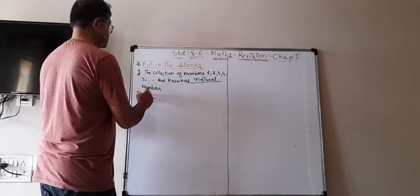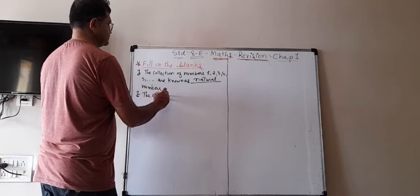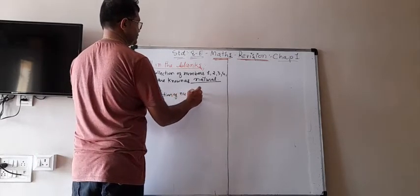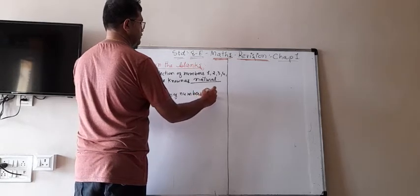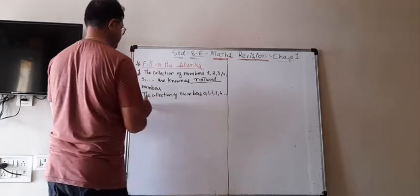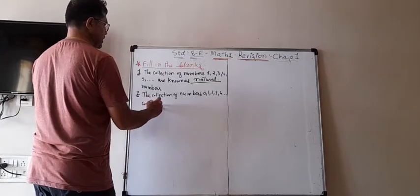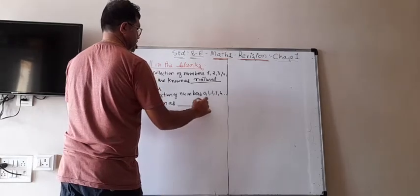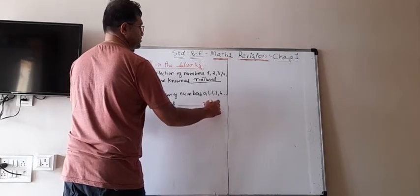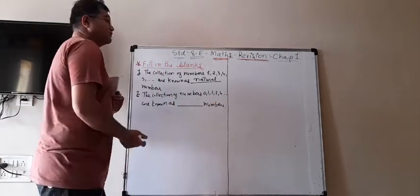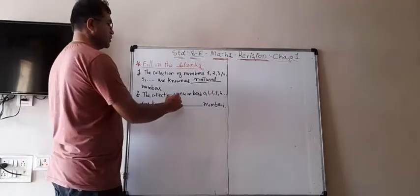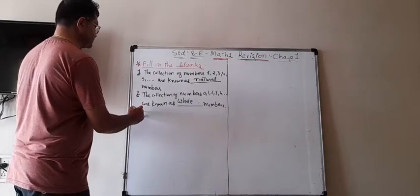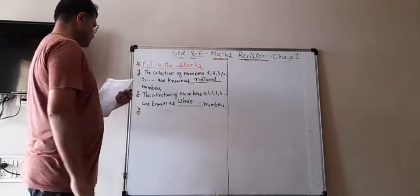The collection of numbers 0, 1, 2, 3, 4, dot dot dot are known as blank. When we add 0 along with the natural numbers, they become whole numbers. So the answer is: whole numbers. Third one: